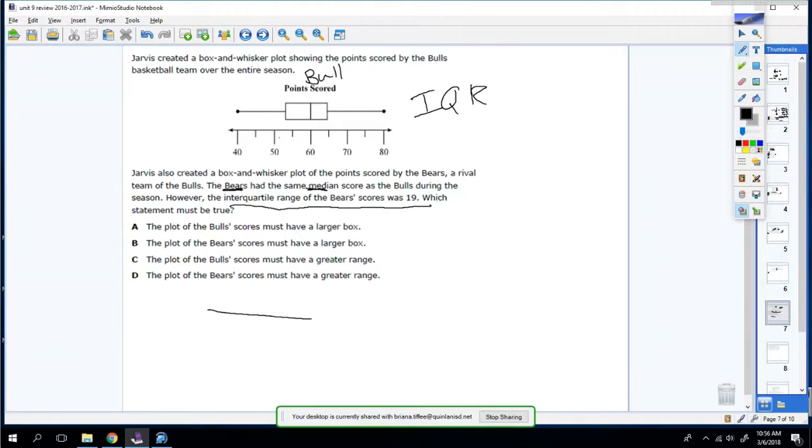So we need to find the interquartile range for the Bulls. So we need to find the IQR. So this is 65. And let's say that this is 53. So we're going to take the ends of our boxes, we're going to do 65 minus 53. So 65 minus 53 is 12. So it means that the Bulls' IQR is 12.